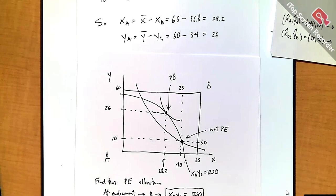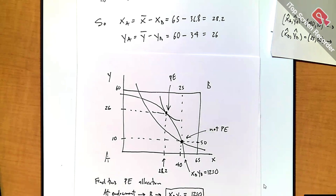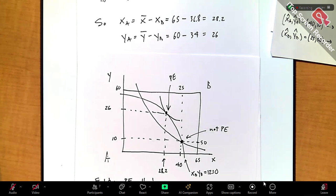So you can actually calculate the exact numbers for the Pareto efficient allocation. The next thing we're going to do is add prices to the economy and see what happens when prices guide decisions instead of barter. I'll just give away the spoiler: it turns out that prices, when they guide people's behavior, act as if an invisible hand is guiding all the selfish behavior to a Pareto efficient allocation — first talked about by Adam Smith. So this is a way of capturing what Adam Smith was talking about: a decentralized economy with prices guiding behavior toward Pareto efficiency, sort of a celebration of capitalism.